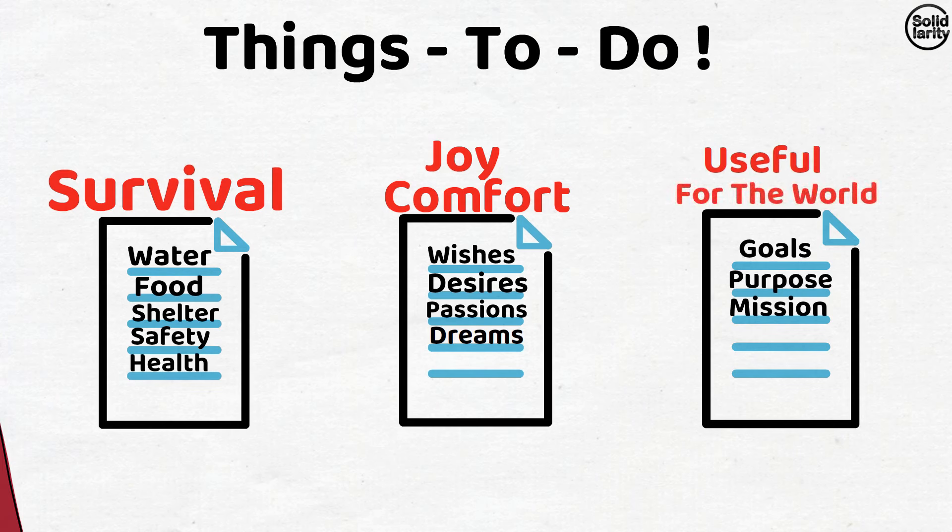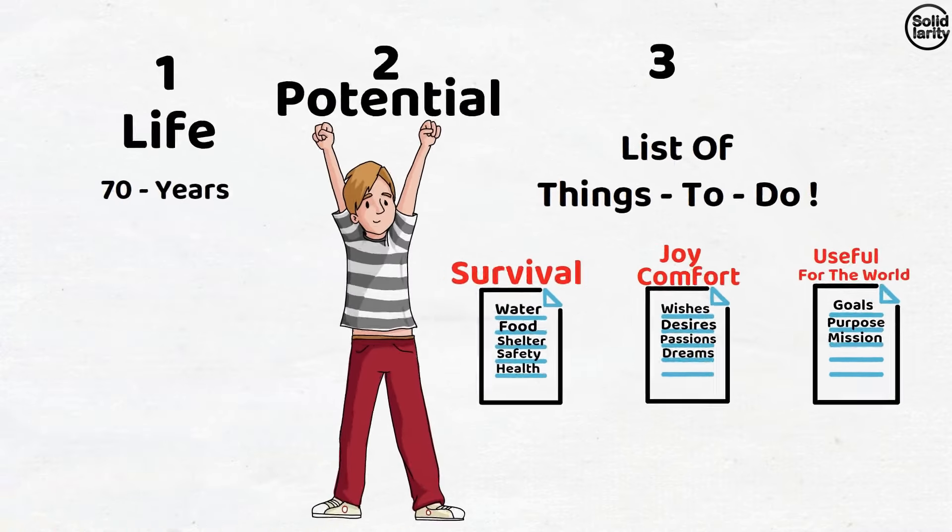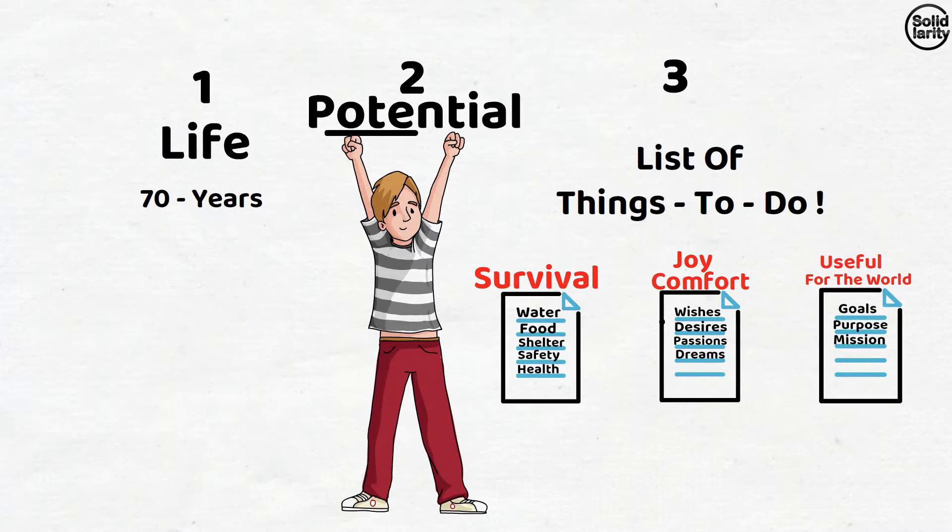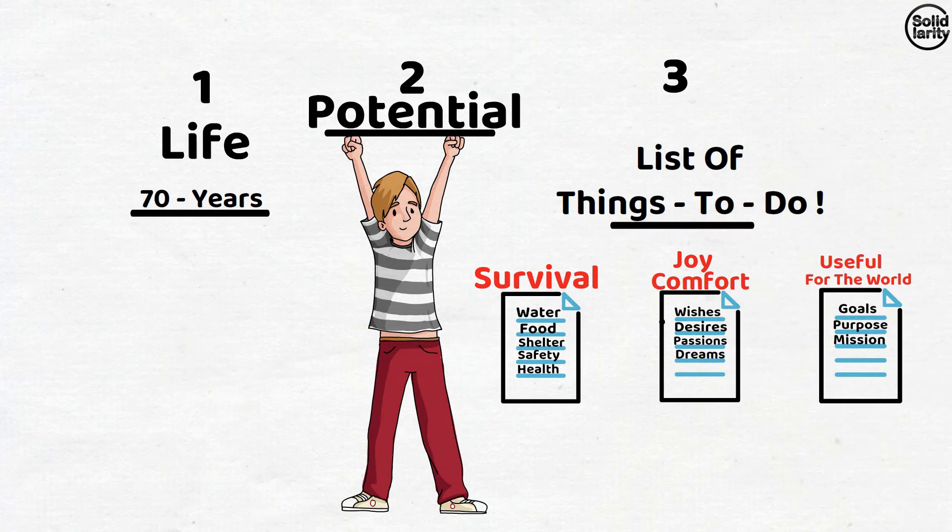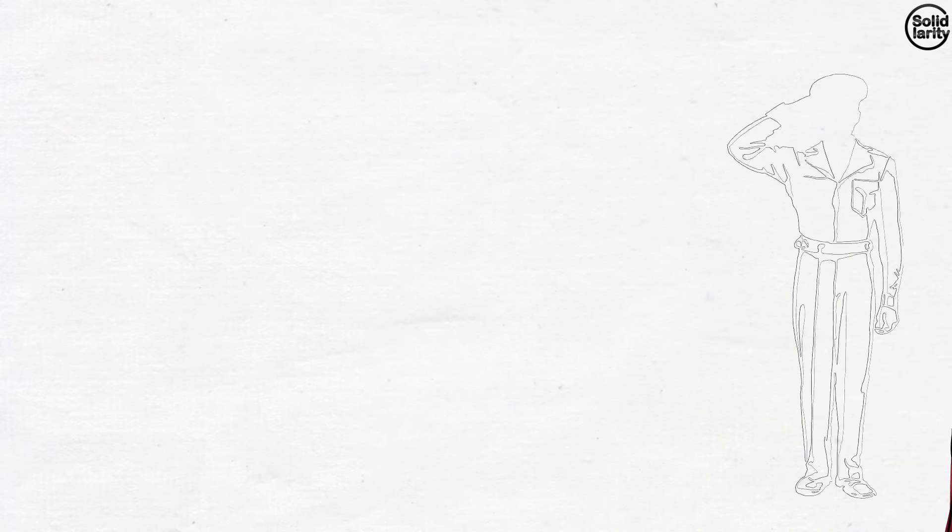Now our topic gets easier for discussion. A man with his potential has got 70 years to check out all his to-do lists. Along with so many other wishes, this man has one specific kind of wish, and that is he wants to have value, respect, and importance in this world.